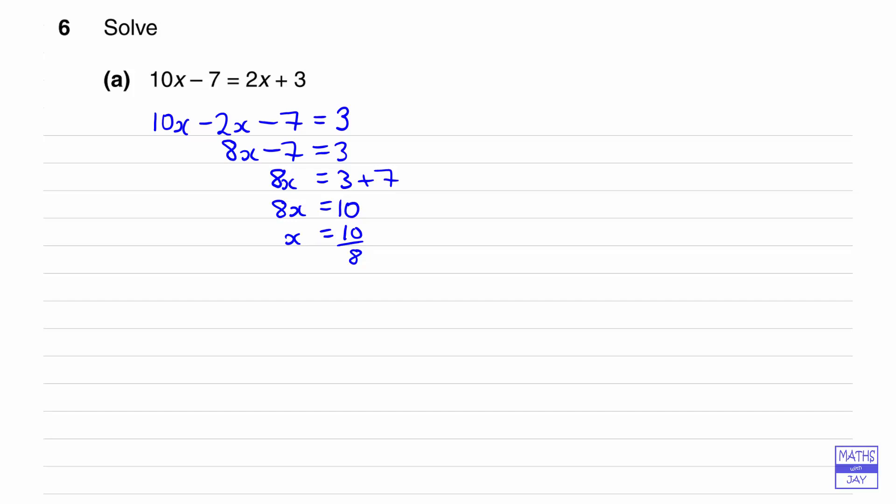And then to find x, we simply divide both sides by 8. So we can cancel that fraction down, so we could leave the answer as 5 over 4, or write it as 1 and a quarter, or write that as a decimal as 1.25.